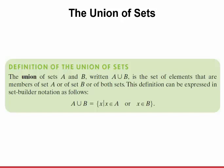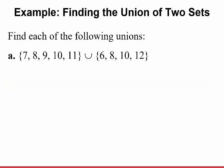Now let's talk about the union of two sets. The union of sets A and B, written A union B, is the set of elements that are members of set A or set B or both sets — think of it as joining or mushing two sets together. In set builder notation: A union B is the set of X such that X is an element of A or X is an element of B. For example, {7, 8, 9, 10, 11} union {6, 8, 10, 12} — you combine the sets. Since 8 and 10 are already included, you don't write them twice, giving {6, 7, 8, 9, 10, 11, 12}.